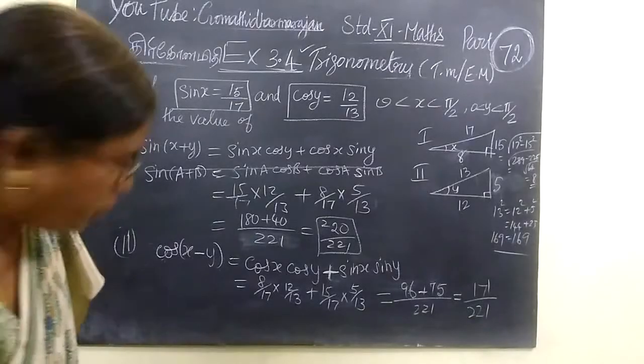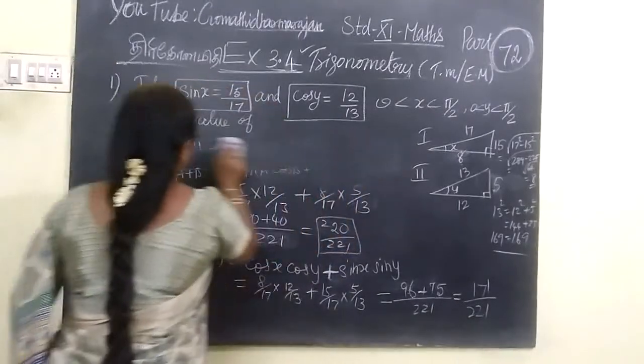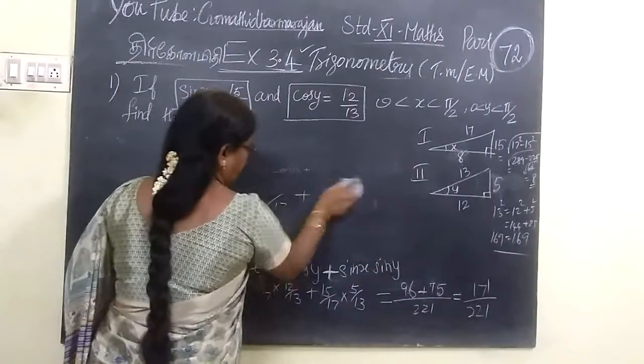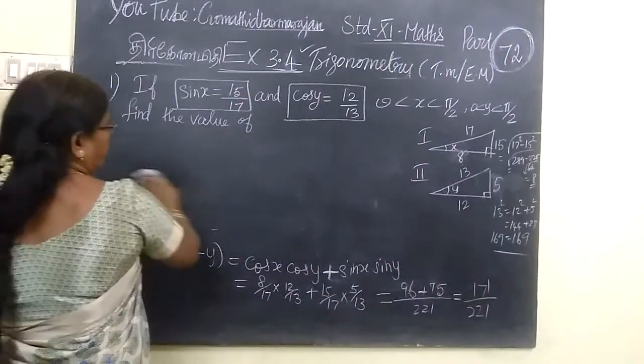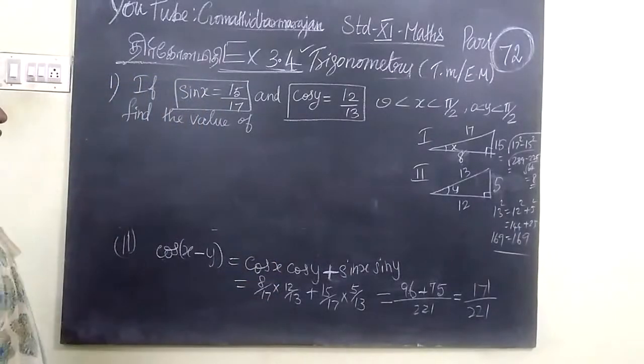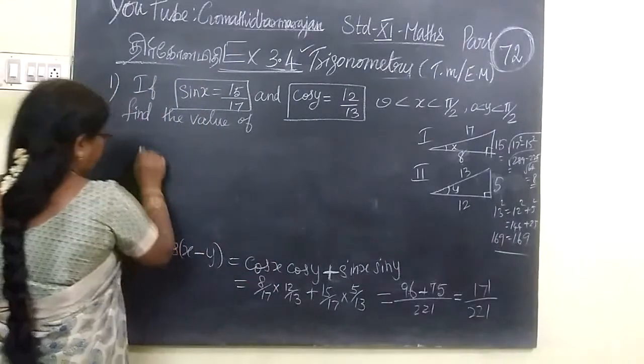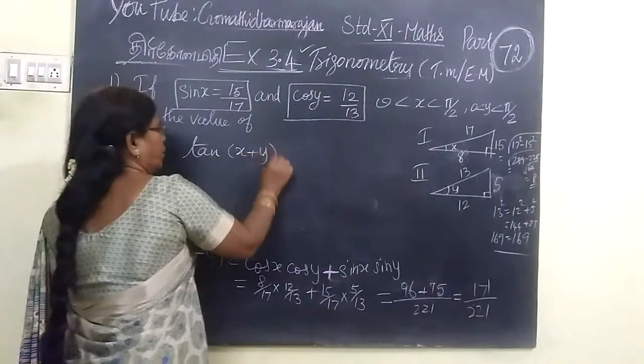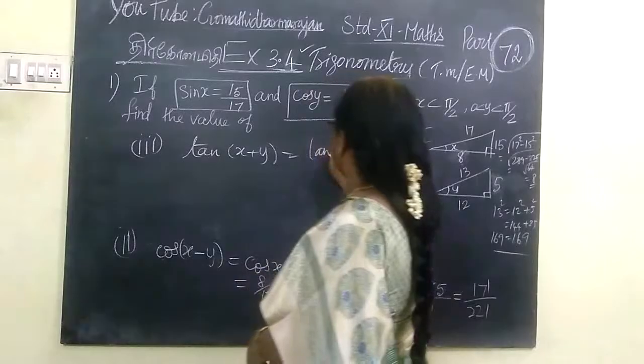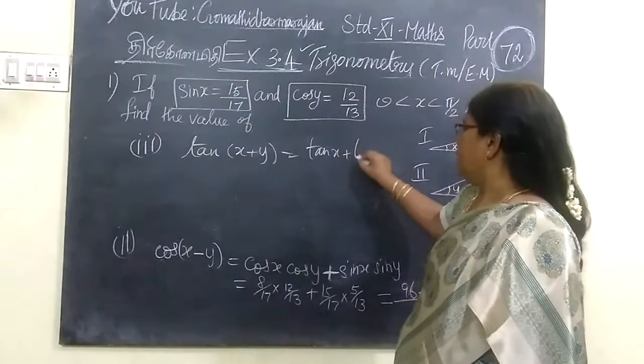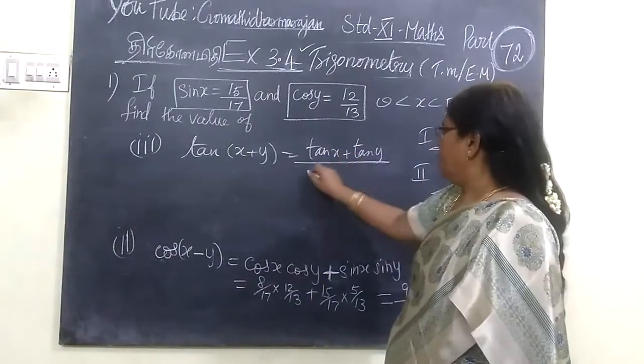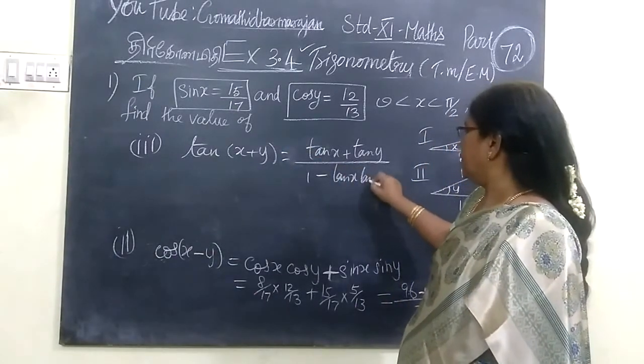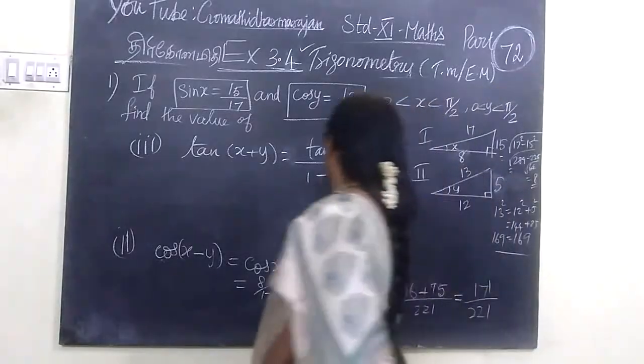Next you want to find tan of x plus y. So this is tan x plus tan y by 1 minus tan x tan y.